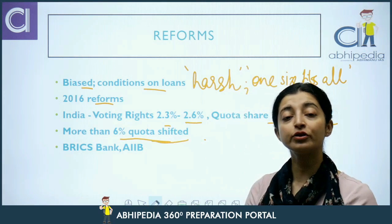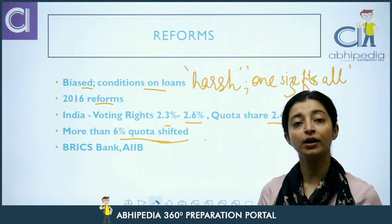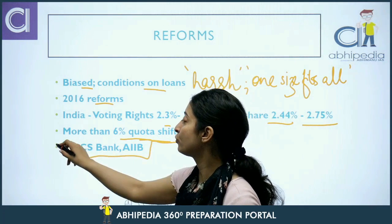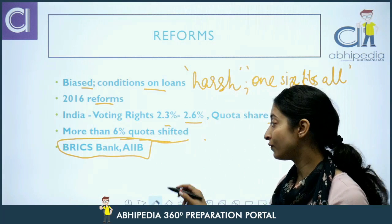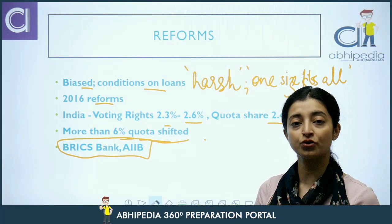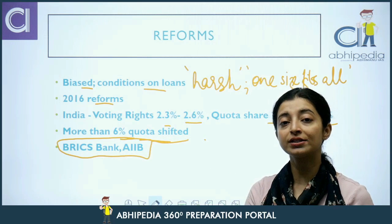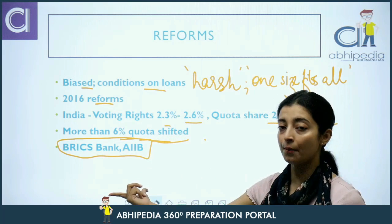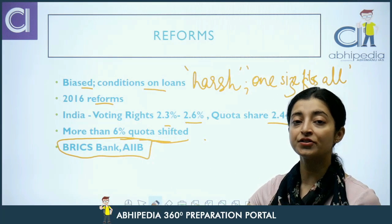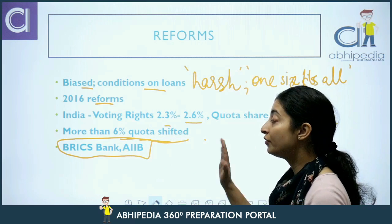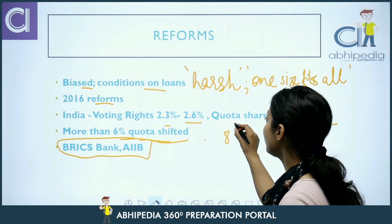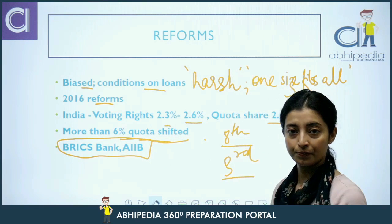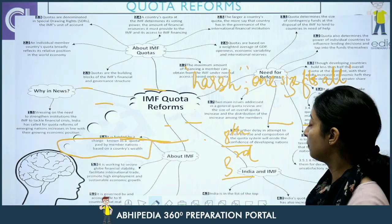Kyunki yeh developing nations — particularly China, India jaise nations — bohot upset the, isliye inhone apne alternate institutions banana shuru kar diye the, jaise BRICS Bank (New Development Bank), Asian Infrastructure Investment Bank. Yeh alternate institutions the taaki jo wahan par unke saath biasness hoti thi — unka share kam tha, quota kam tha — aisa yahan par na ho. We know that China is currently the 3rd largest contributor to IMF, aur India 8th largest contributor hai.